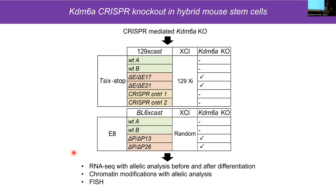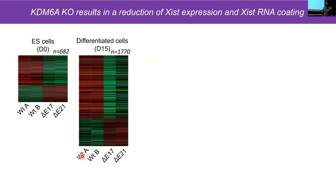We took these cells through differentiation and used RNA-seq with allelic analysis to look at transcription changes before and after differentiation, chromatin modifications with allelic analysis, and some in-situ hybridization studies. First, we looked at differentially expressed genes between wild-type and knockout. We saw more genes changed in differentiated cells at day 15 compared to day 0, which was expected given KDM6A's role in regulating differentiation. Interestingly, in the population of downregulated genes, we saw Xist.